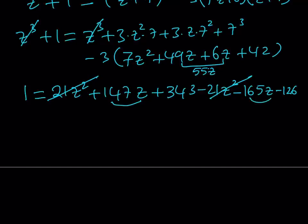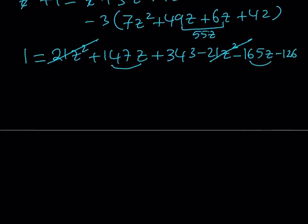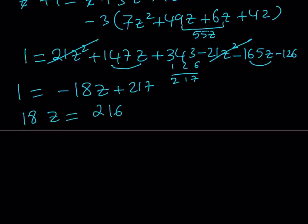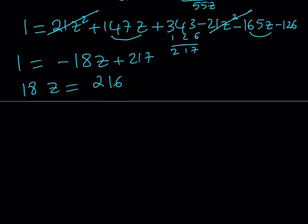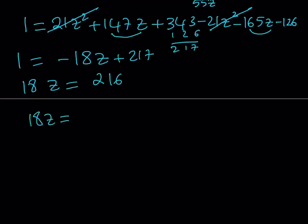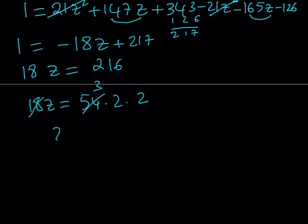I have two like terms. I can add these up and subtract. That is going to be a negative 18z. So, 1 equals negative 18z plus 343 minus 126. That should be 217. So, that's going to give me a positive 217. From here, we should be getting 18z equals 216. 216 is 2 times 108 and it's divisible by 9. 18z equals 108, which is 54 times 2 times 2. 54, 18 goes into 54. That's going to be 3 times 2 times 2. That means z is equal to 12.